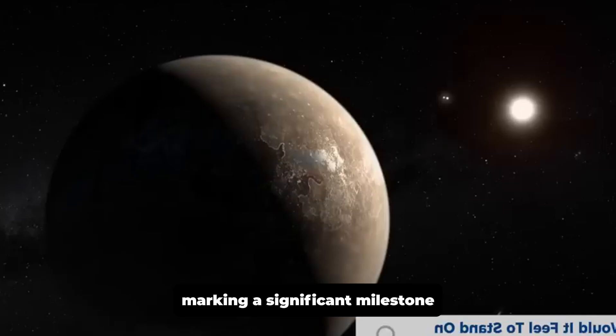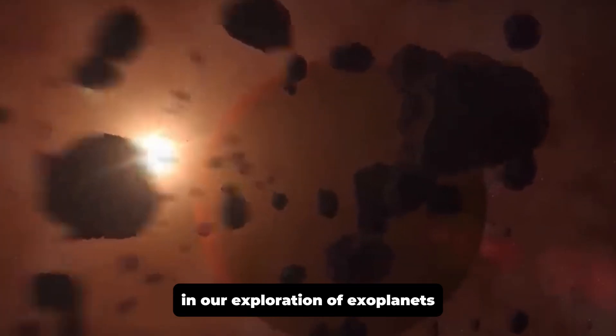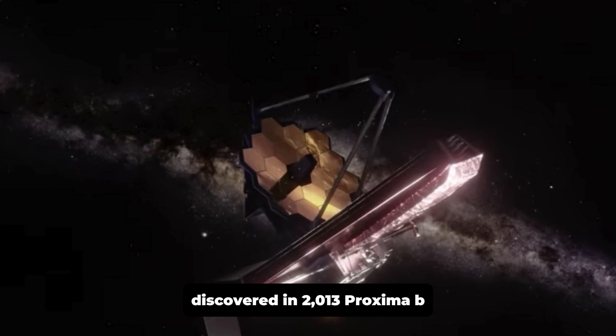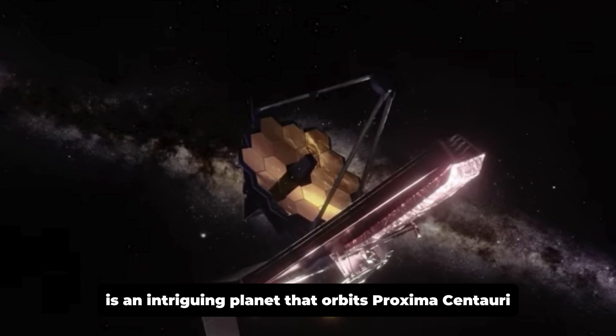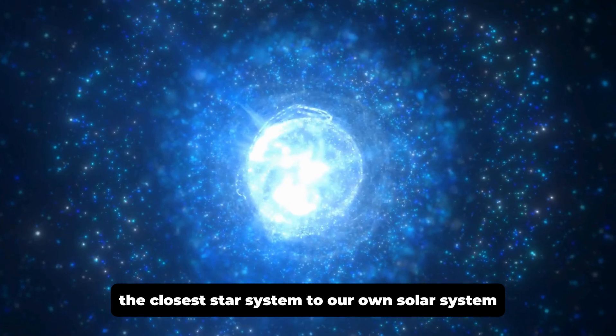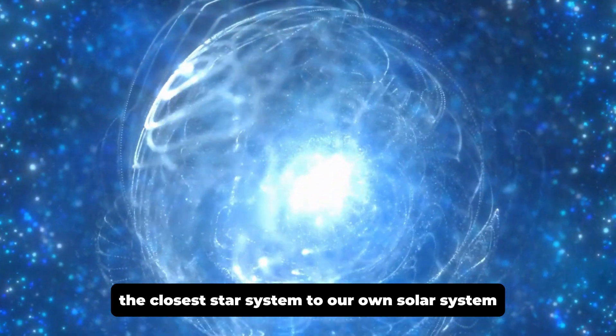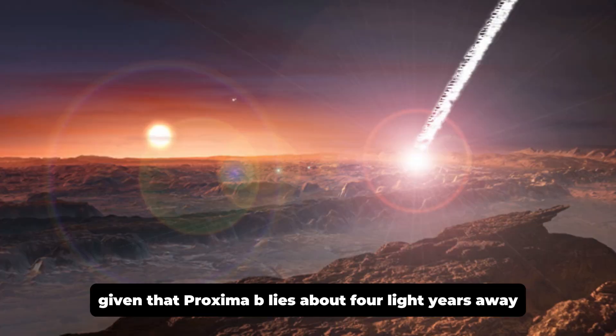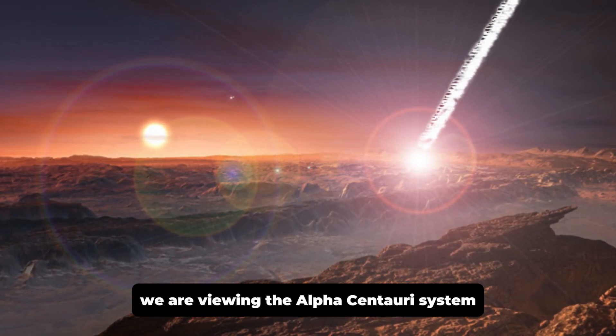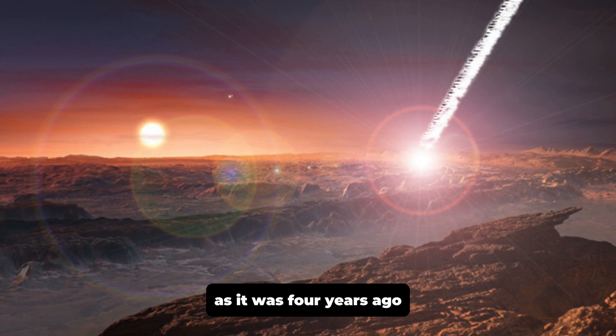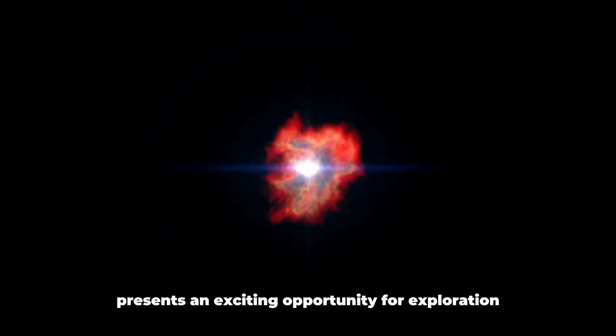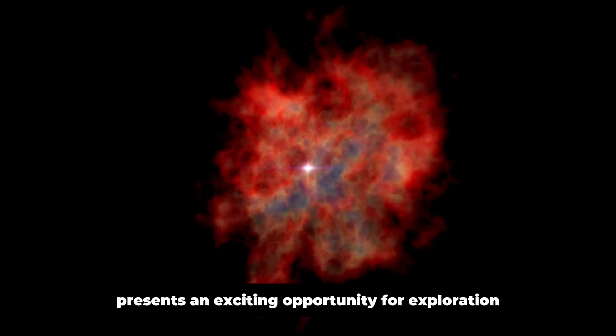Discovered in 2013, Proxima B is an intriguing planet that orbits Proxima Centauri, the closest star system to our own solar system. Given that Proxima B lies about four light-years away, we are viewing the Alpha Centauri system as it was four years ago. This relatively short distance in astronomical terms presents an exciting opportunity for exploration.